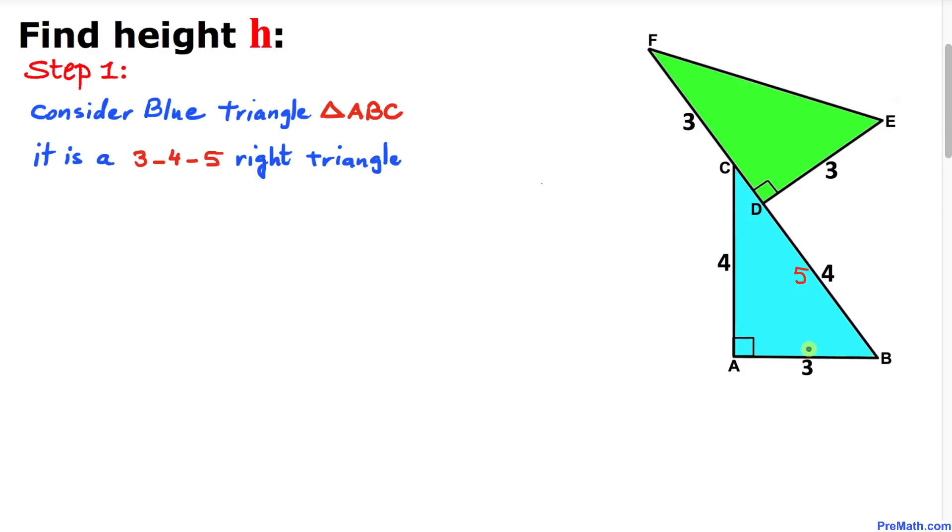This can be easily proven using the Pythagorean theorem. Thus, the length of side BC is 5 units. We also know that side length BD is 4 units, so therefore side length CD is going to be 1 unit.